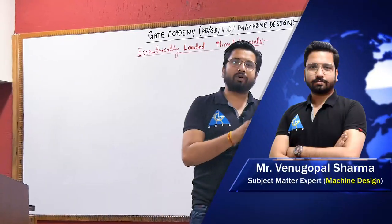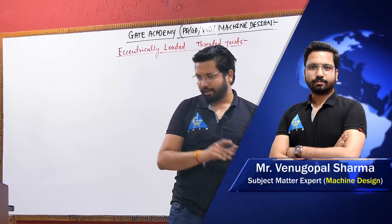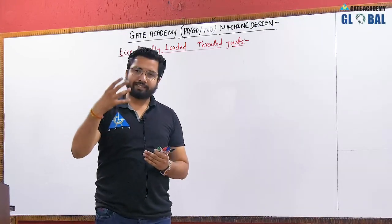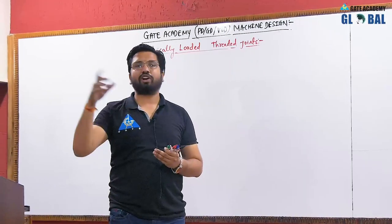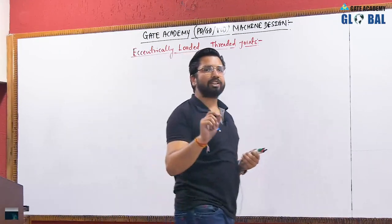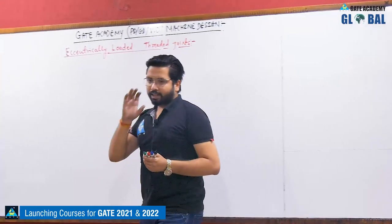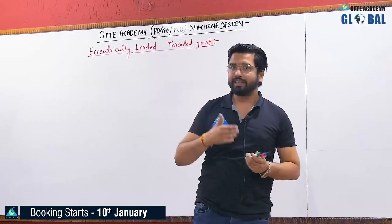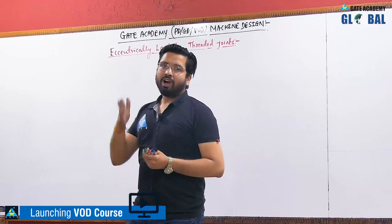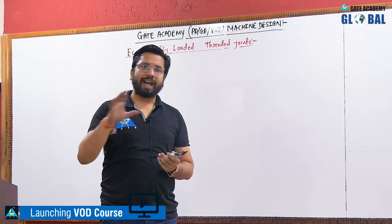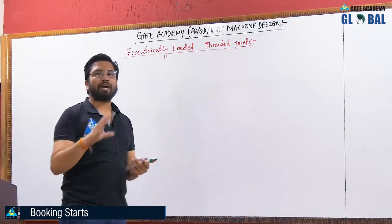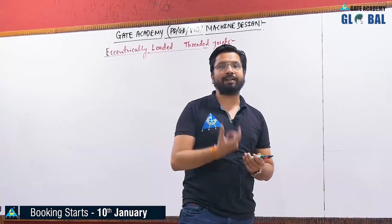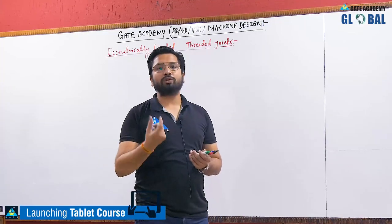Basically, eccentrically loaded bolted joints or screwed joints will be there, with different bolts or screws given in your question. A metric thread will be given in the question and the specifications of those threads will be given. The fundamental thing you should understand is that in the GATE examination, we will always consider that the shank portion is subjected to shear, not the core portion. The calculation of load carrying capacity in threaded joints for GATE examination will be based on the diameter of the shank portion, that is the nominal diameter of the bolts or screws.